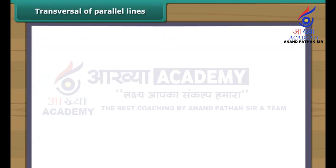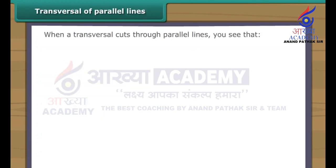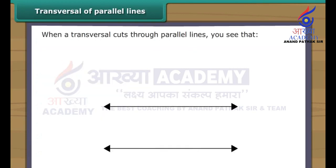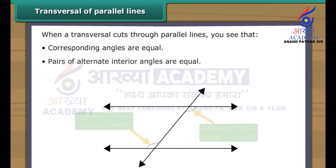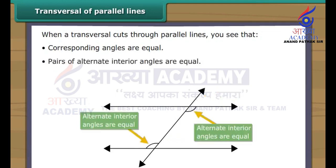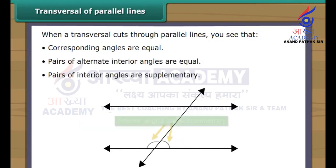Transversal of parallel lines: When a transversal cuts through parallel lines, you will see that corresponding angles are equal, pairs of alternate interior angles are equal, and pairs of interior angles are supplementary.